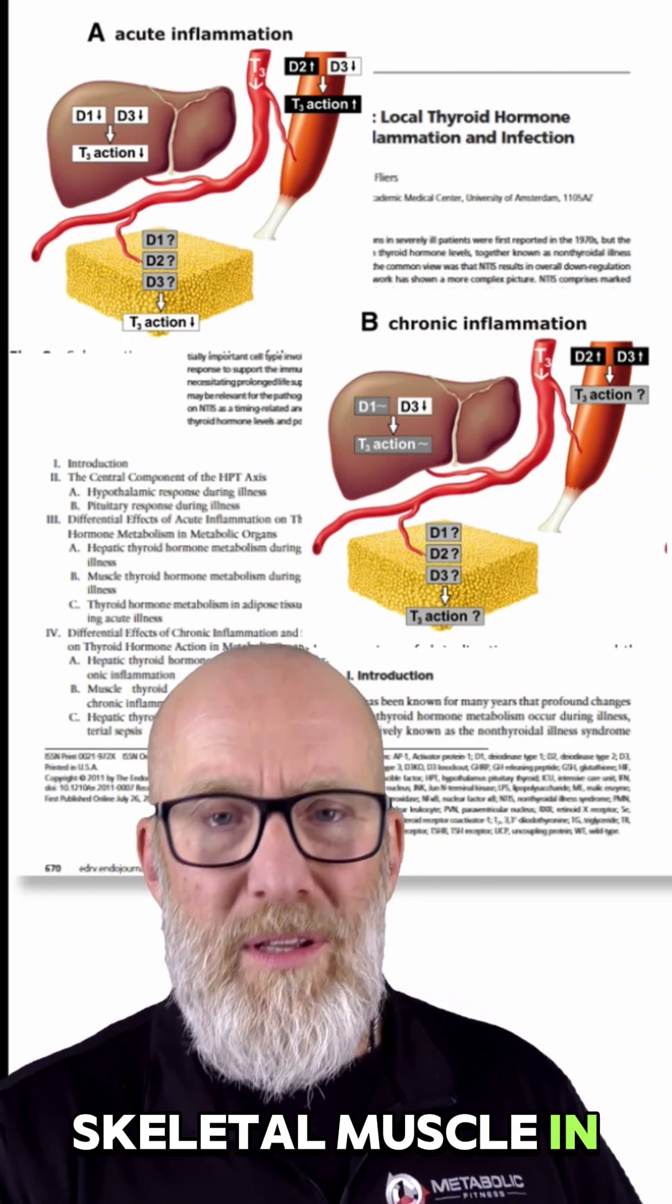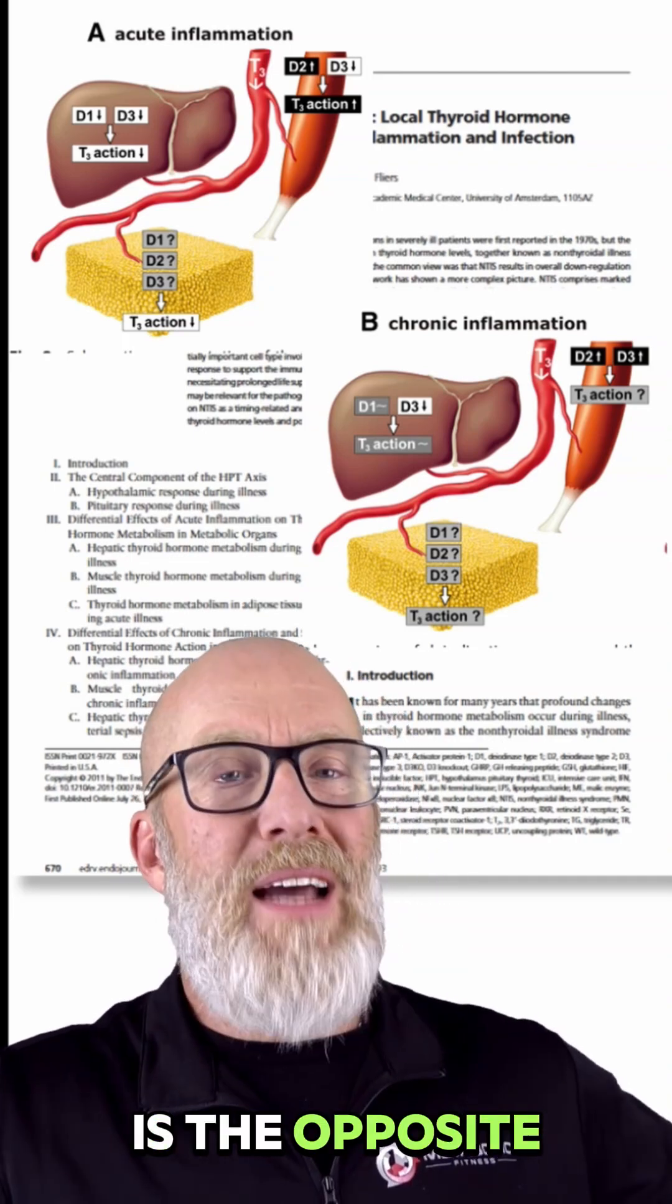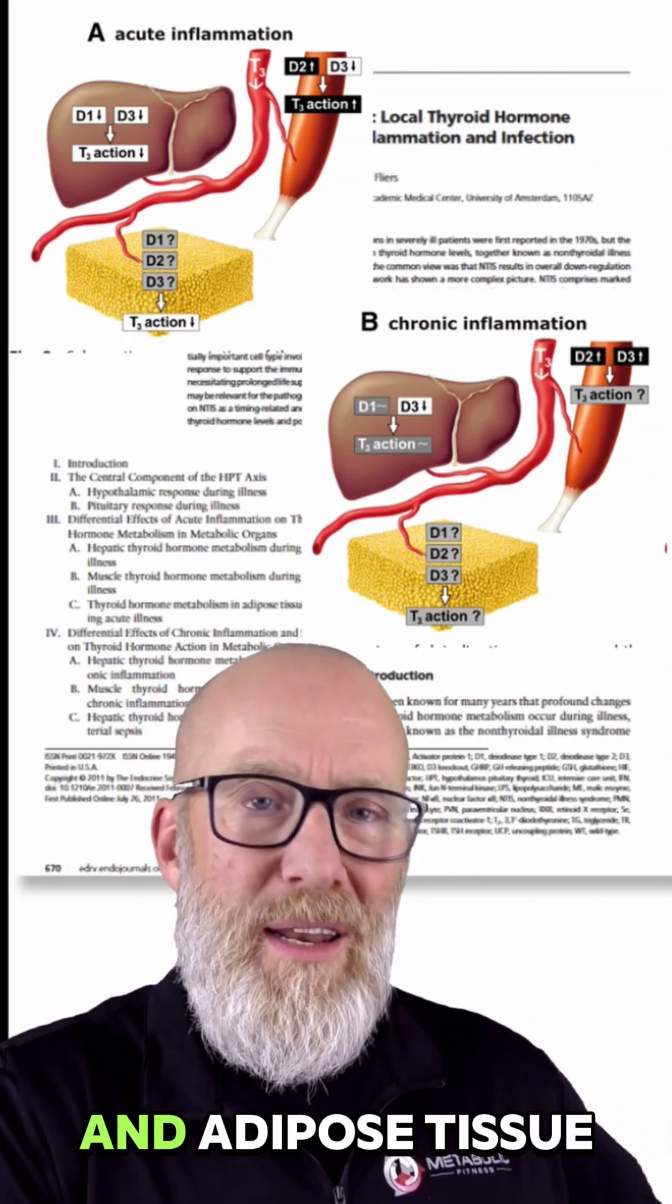What happens in skeletal muscle in the acute inflammation phase is the opposite of what happens in the liver and adipose tissue.